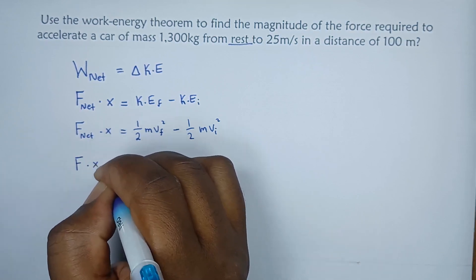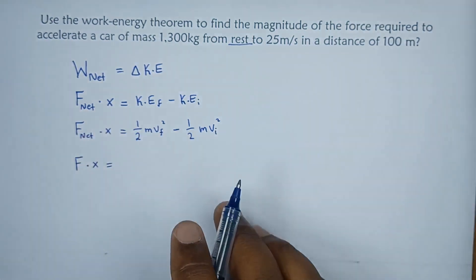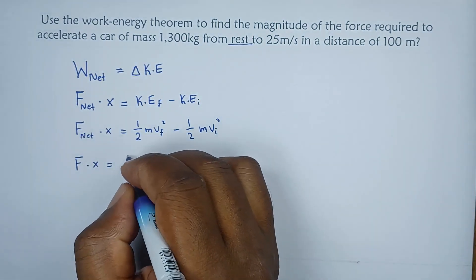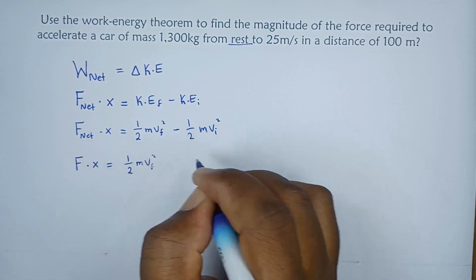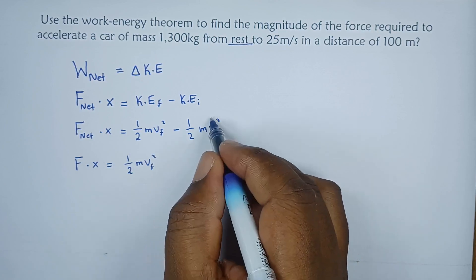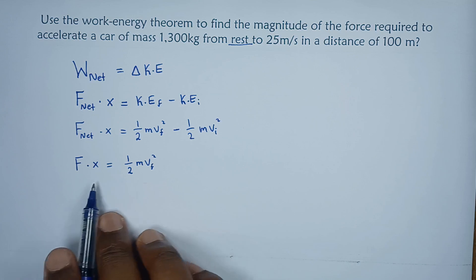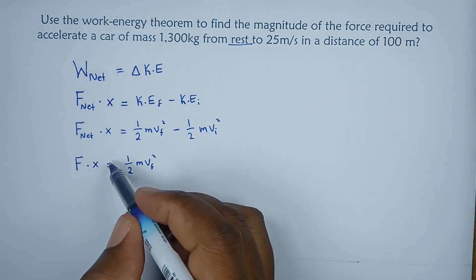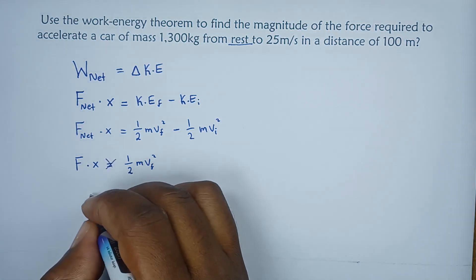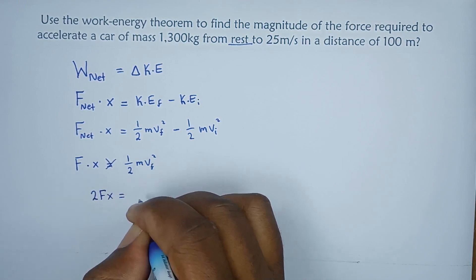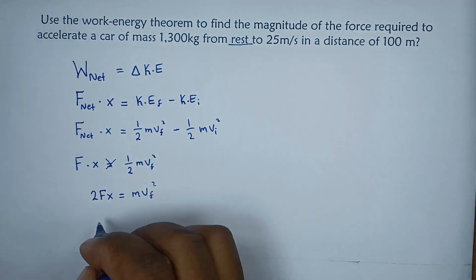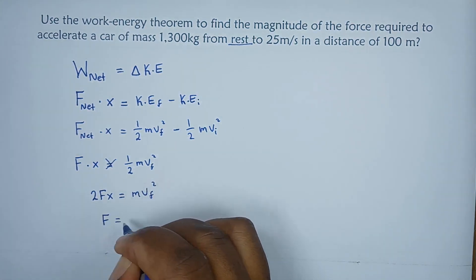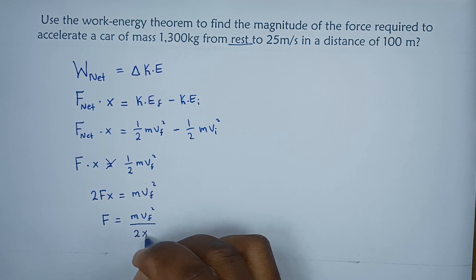Hence, the force multiplied by the displacement is equals to half mv final squared. Remember, the initial is zero, so this just cancels out. Since we're looking for force, let's make force the subject of the formula. If we cross multiply, we'll get 2Fx equals mv final squared. So F equals mv final squared divided by 2x.